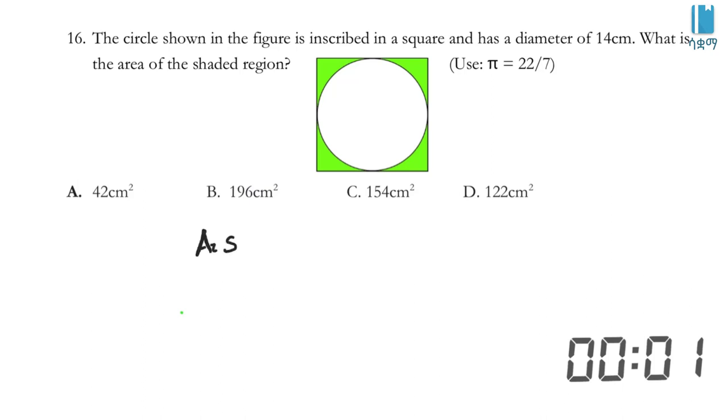The side of the square - the circle's diameter is 40 centimeters. The circle is inscribed in the square, so the diameter of the circle equals the side of the square. Therefore, the side is 40 centimeters.